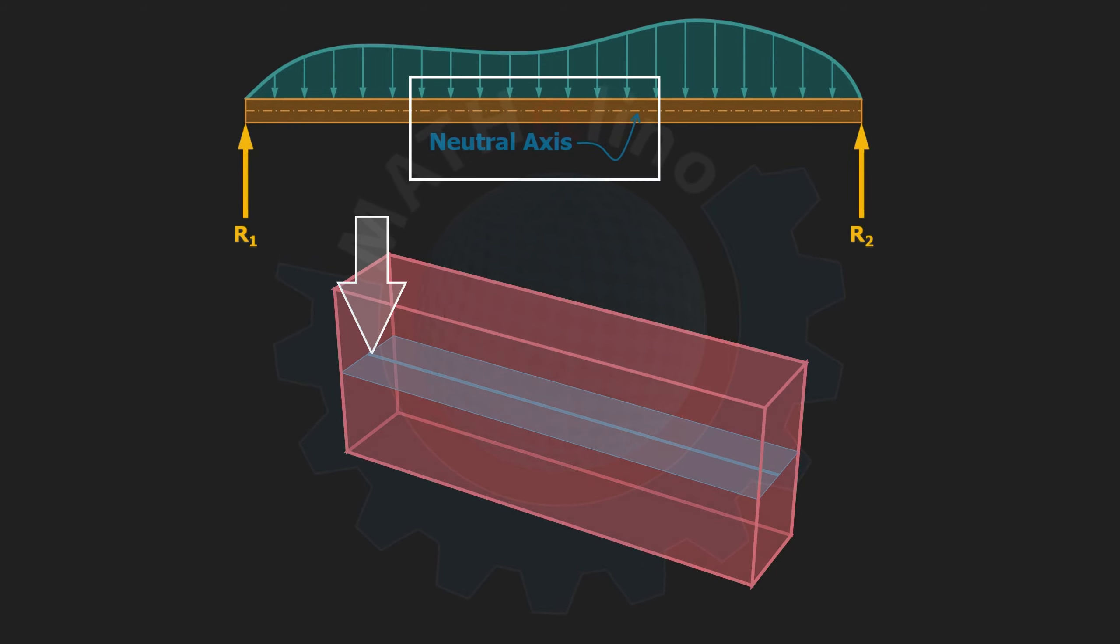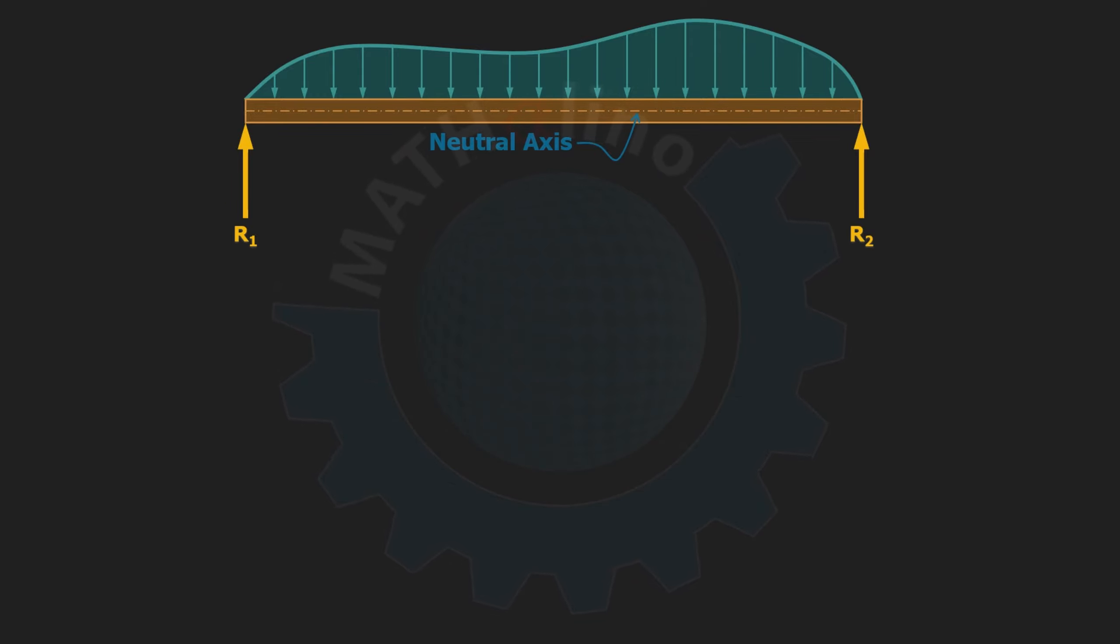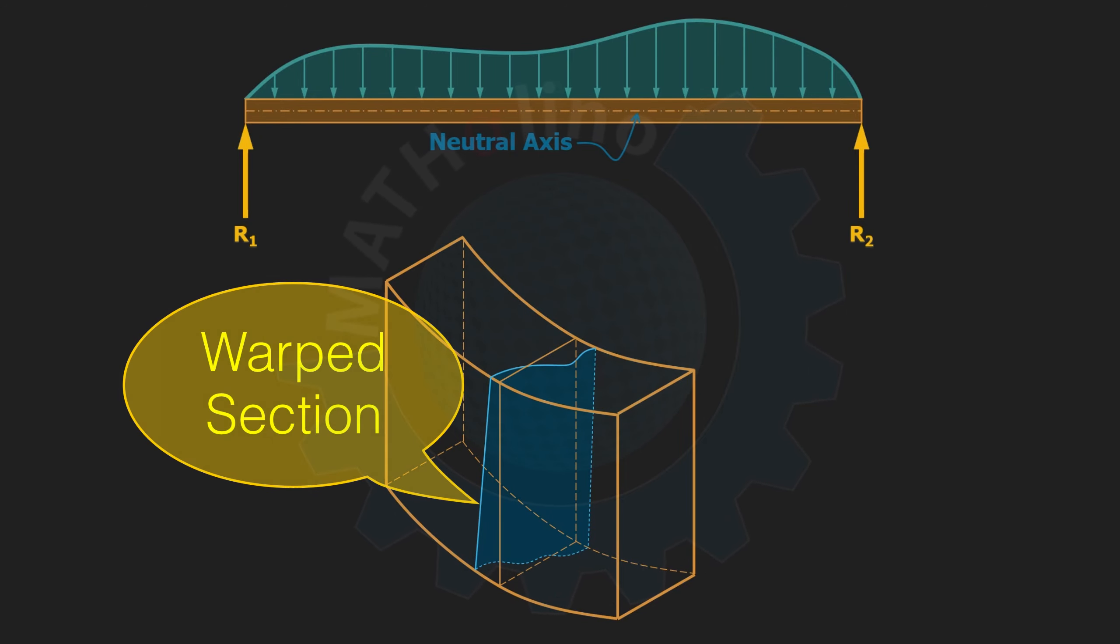Number three, all cross sections of the beam remain plane and perpendicular to the longitudinal axis during deformation. Number four, the material is homogeneous and obeys Hooke's law, and the moduli of elasticity for tension and compression are equal.